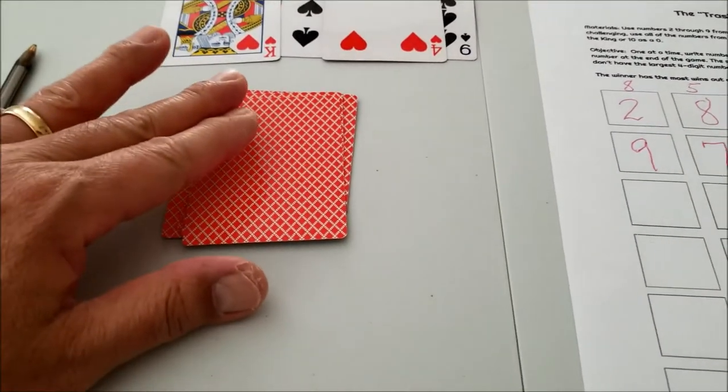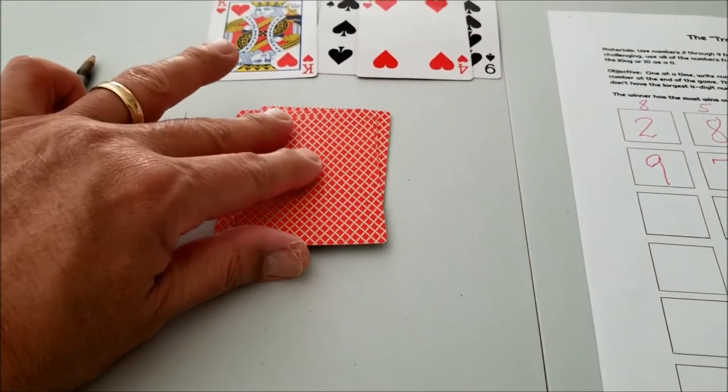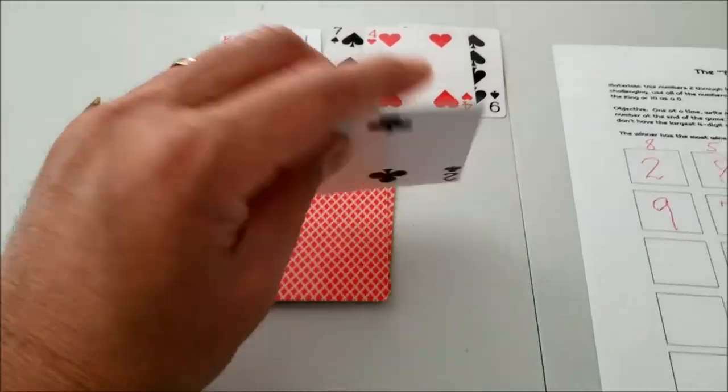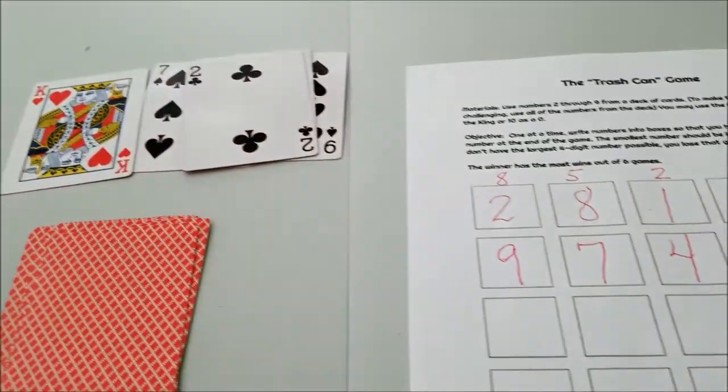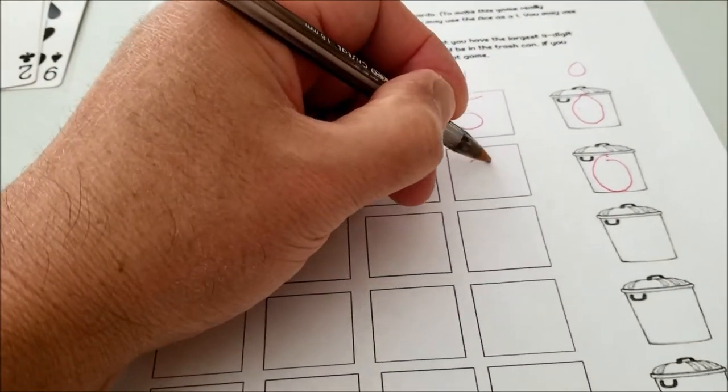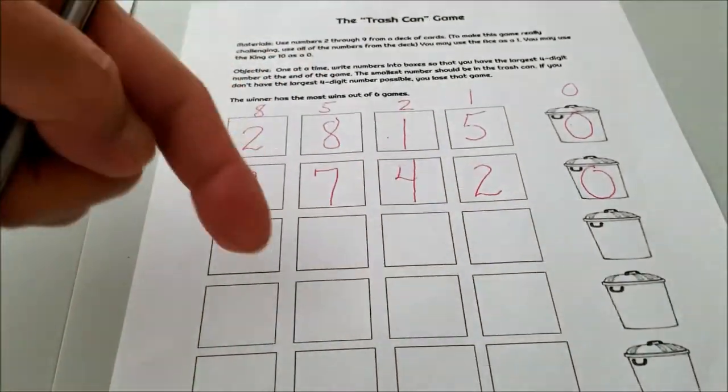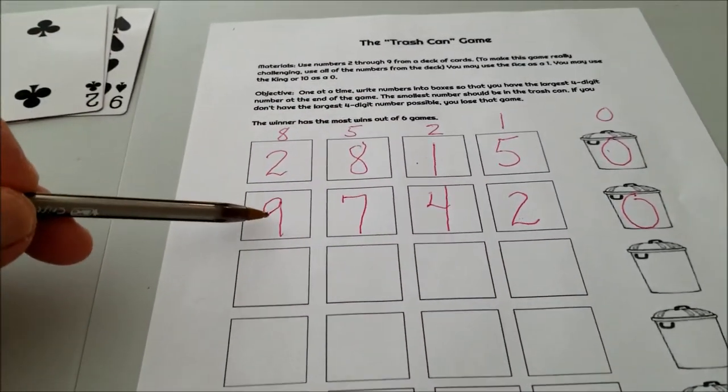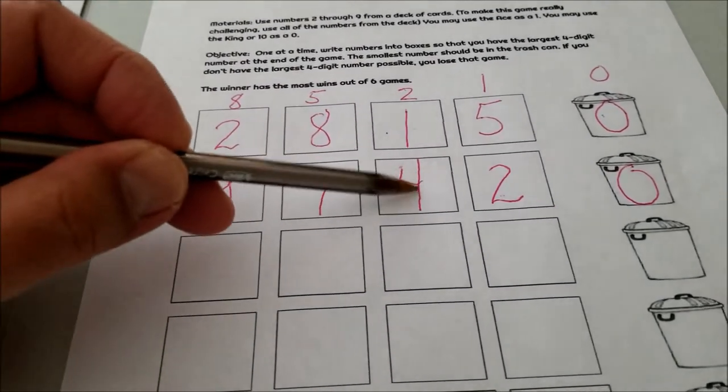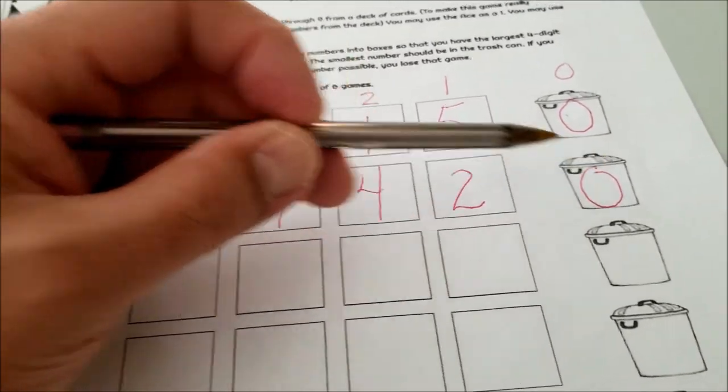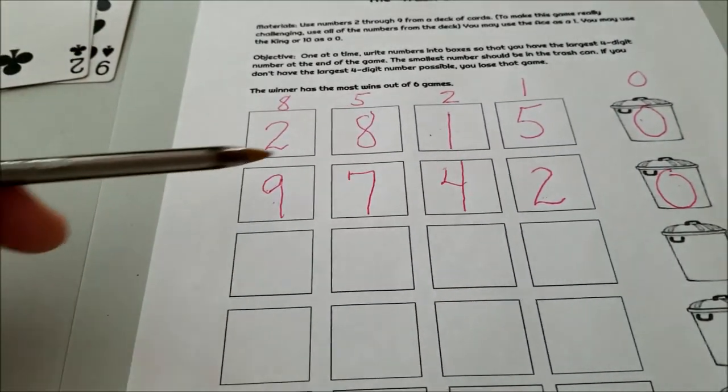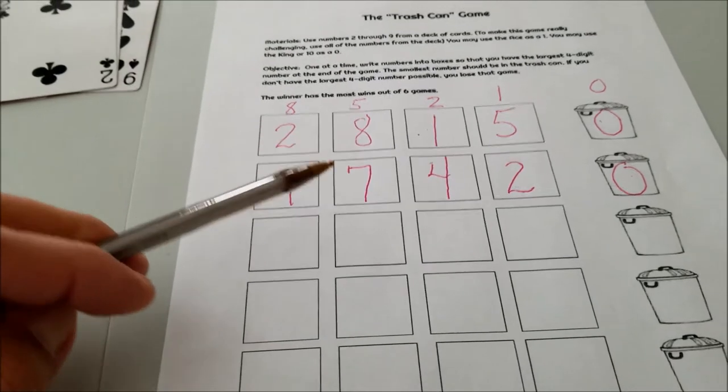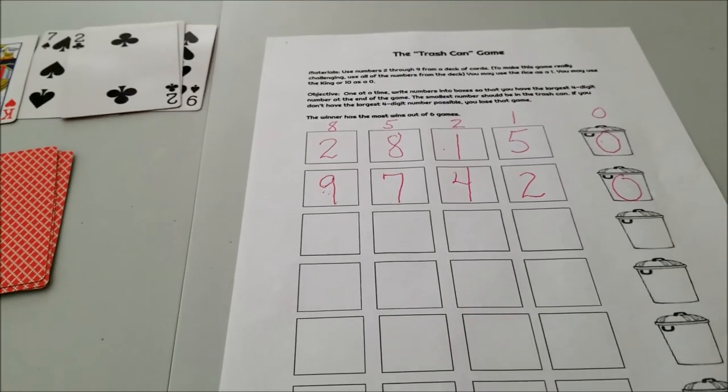All right, everybody, so this is the last card. This is going to determine who wins. Ready? Here we go. There you go. It was a two. So give me a comment in the comment section if you put the same numbers I did. So the largest number was nine, seven, four, two. Zero was in the trash. Congratulations, everybody that has this. We won that game.